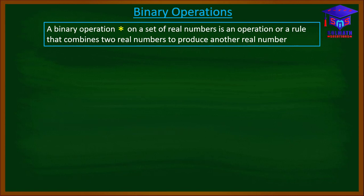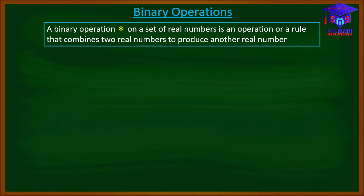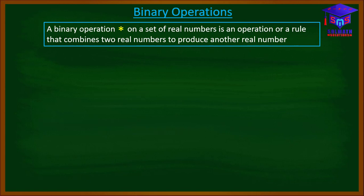In simple terms, a binary operation — let's say star — on a set of real numbers is an operation or a rule that combines two real numbers to produce another real number.